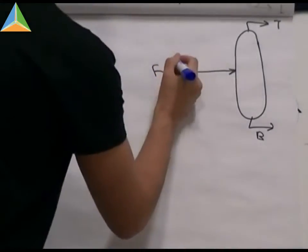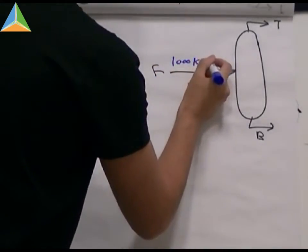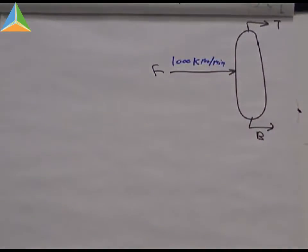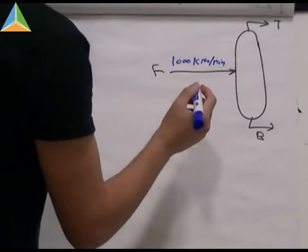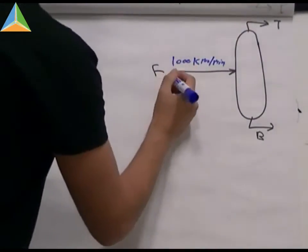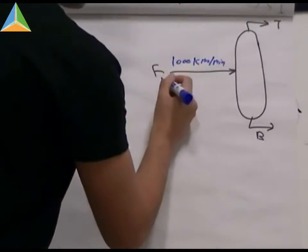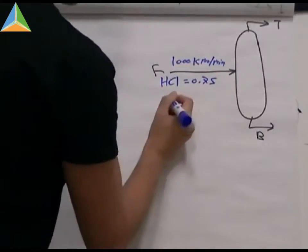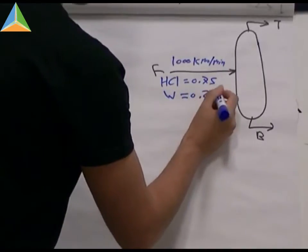We get 1000 kmol of feed stream per minute. And the mole fraction of each stream is, for the feed, we get HCl 0.75. The water in the feed stream is 0.25.